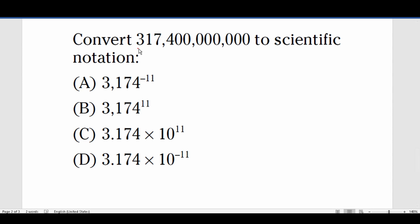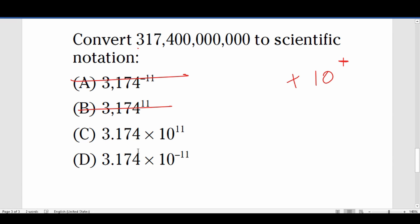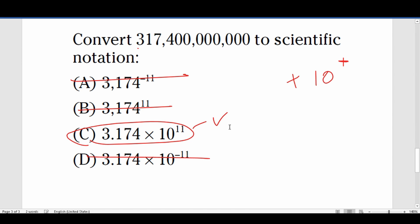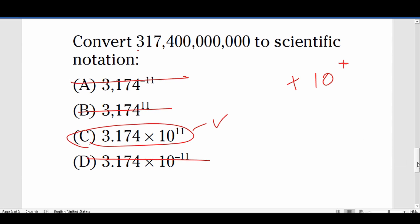Let's take a look at another one: convert this number to scientific notation. It's a very big number, so we know it's going to be multiplied by base 10 positive. No base 10 in this one. No base 10 in this one. This one has base 10 negative. So without doing any work, we're able to identify the correct form of scientific notation. That's all I have for you in this video.